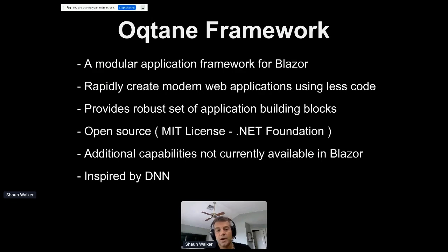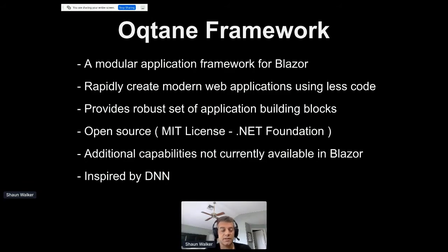Octane is a modular application framework natively built on Blazor and .NET Core. It allows you to rapidly create modern web applications and provides a robust set of application building blocks. It's open source under an MIT license — the same open source license as DNN — and it is a member project in the .NET Foundation, same as DNN.